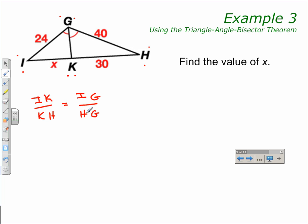Now that we have our proportion with the measures of the sides, or the endpoints of the sides, we can substitute in the values. For IK, we'll substitute x. For KH, we'll substitute 30. For IG, we'll substitute 24. And for HG, we'll substitute 40. Use our cross products.